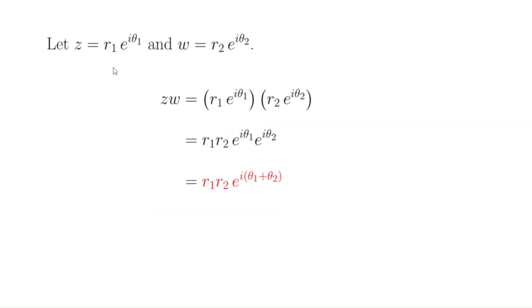Suppose z and w are written in polar form: z equals r1 e to the i theta1, and w equals r2 e to the i theta2. Then z times w equals r1 e to the i theta1 times r2 e to the i theta2, which rearranges to r1 times r2 times e to the i times (theta1 plus theta2). So the modulus of the product is r1 times r2 — the product of the moduli — and the argument is theta1 plus theta2, the sum of the arguments. That's why complex numbers multiply with the geometry that they do.